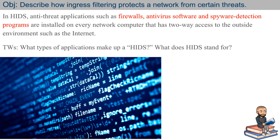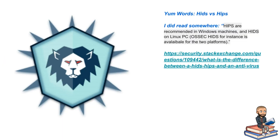A networked computer is one that has two-way access to the outside environment such as the internet — though maybe not so redundant, since you could have a computer that can read from the internet but not write to it. So those are two more key terms: HIPS and HIDs.